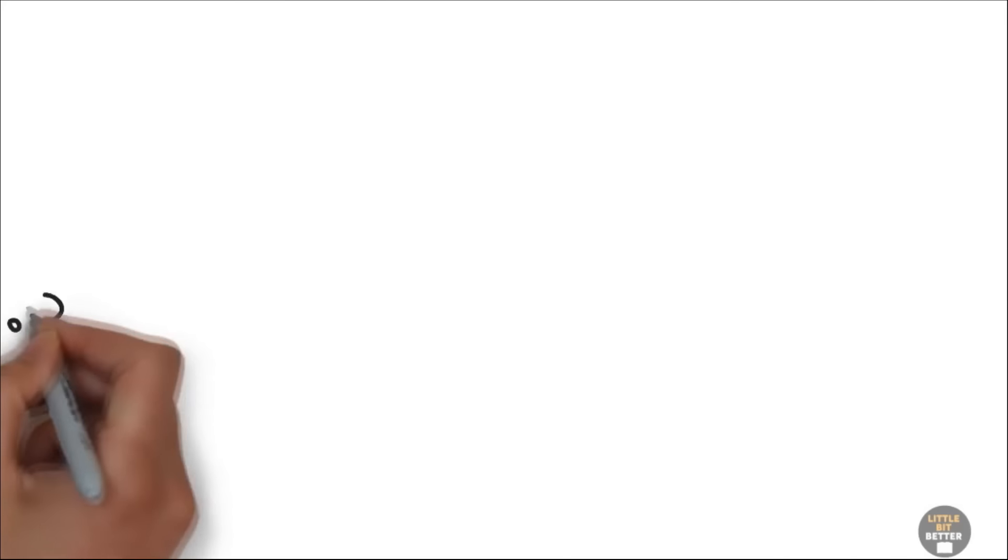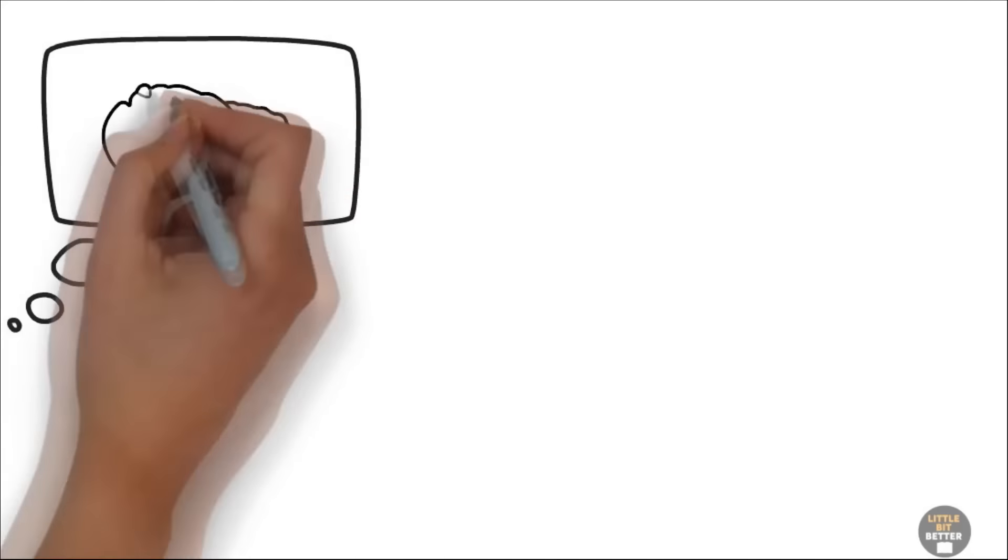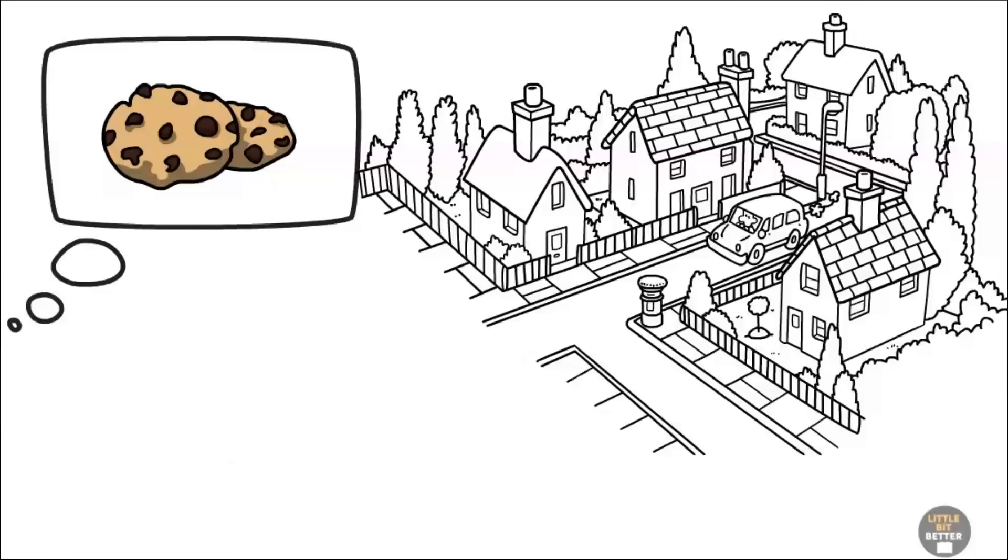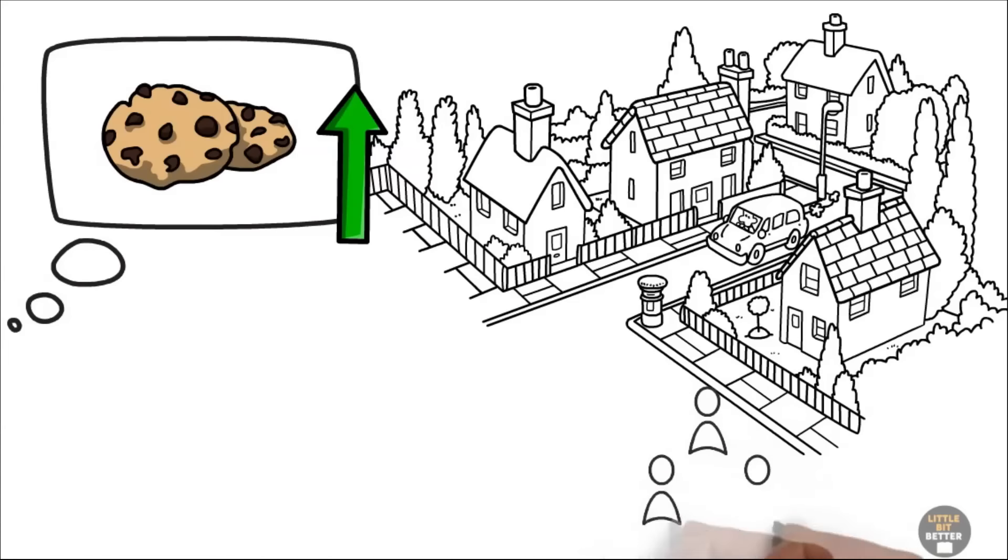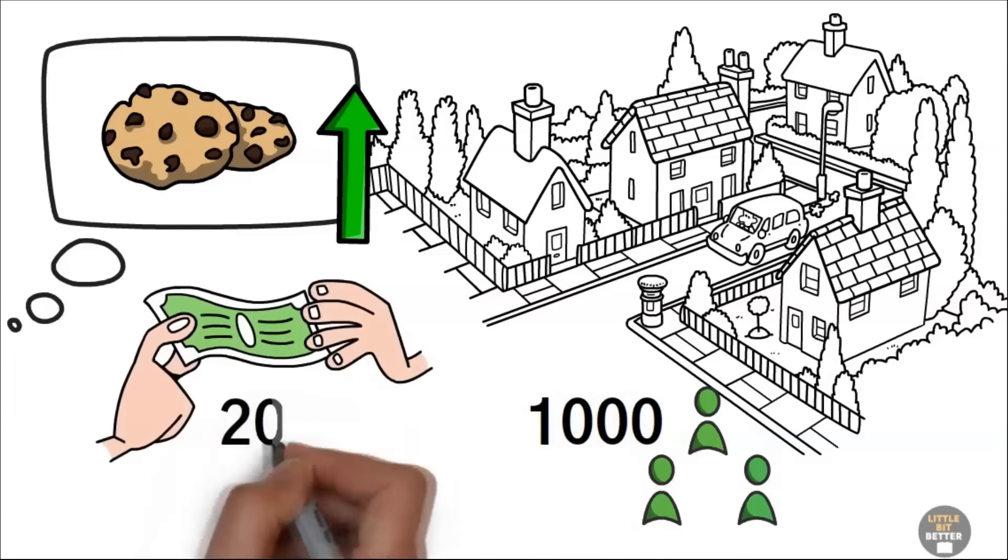Here's another simple example. Let's say you want to sell homemade cookies in your small hometown. The market trend is up, the market size is 1,000 people, and the price of your cookies is $20.